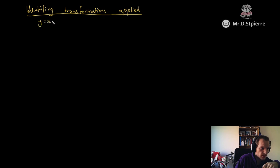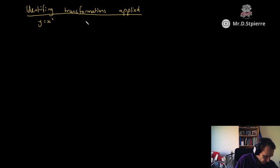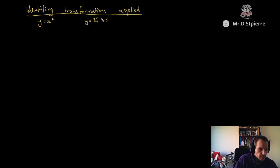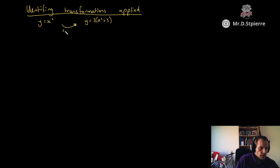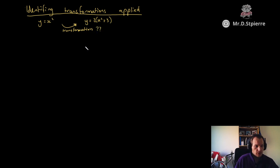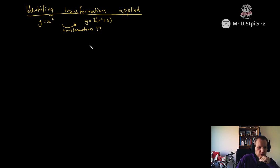For example, we might be told we have y equals x squared as our base function, and then we are transforming that to y equals 2x squared plus 3. We need to find out what transformations would achieve that. We're going to look at both the dash method and using inspection.